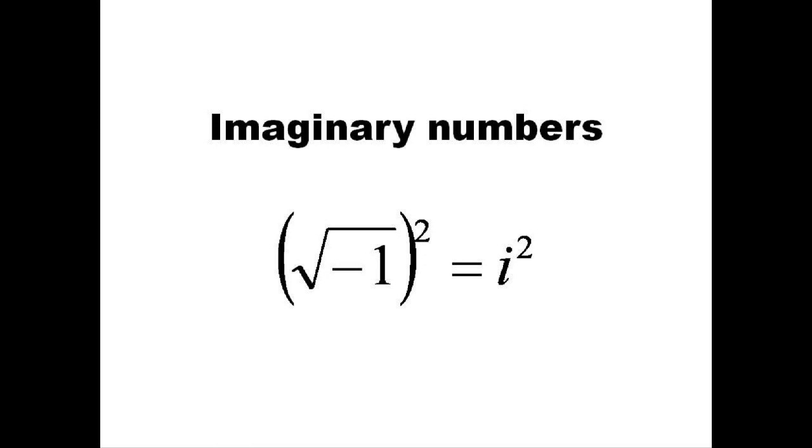An important property of imaginary numbers is that since the square root of negative one equals i, if we square both sides of that equation, we can see that i squared equals negative one.